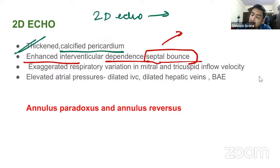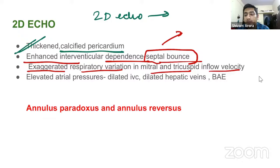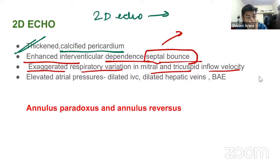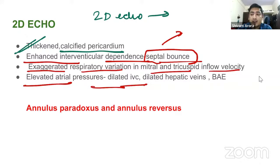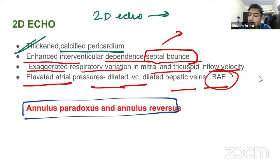There is exaggerated respiratory variation in mitral and tricuspid inflow velocity. When more blood flows on the right side, the interventricular septum is pushed left, compressing the left heart and decreasing mitral inflow. When more blood flows on the left side, the septum is pushed right, decreasing tricuspid inflow. Other 2D echo findings include elevated atrial pressures, dilated IVC, dilated hepatic veins, bi-atrial enlargement, annulus paradoxus, and annulus reversus.